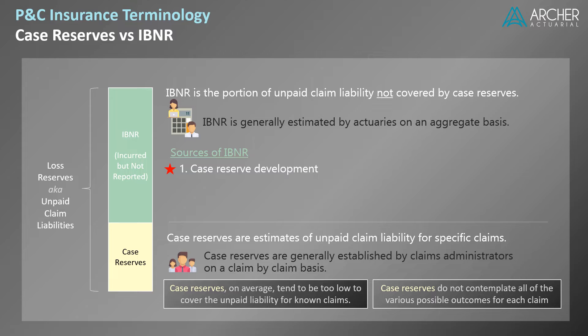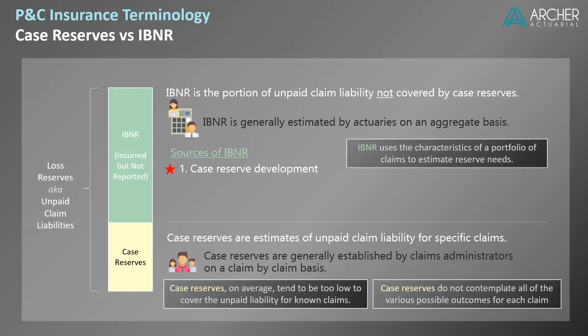Instead, case reserves reflect the most likely future payments based on a limited review of each claim. On the other hand, IBNR is calculated on an aggregate basis, where the characteristics of a group of claims can be used to advantage.